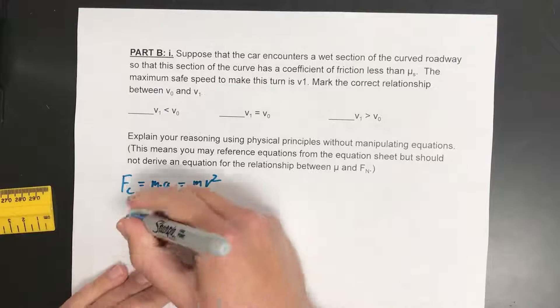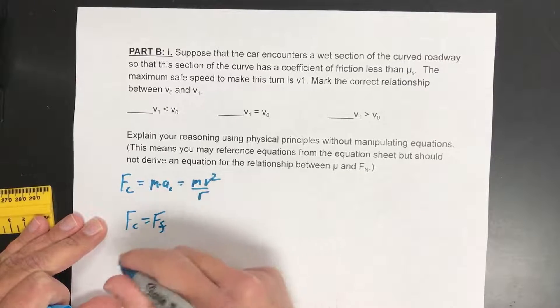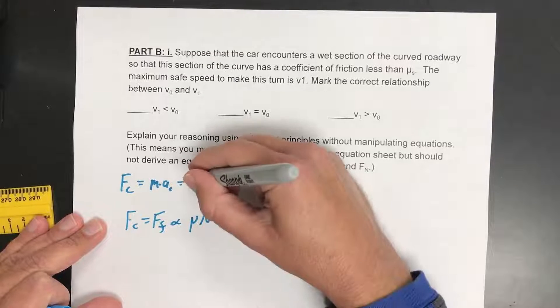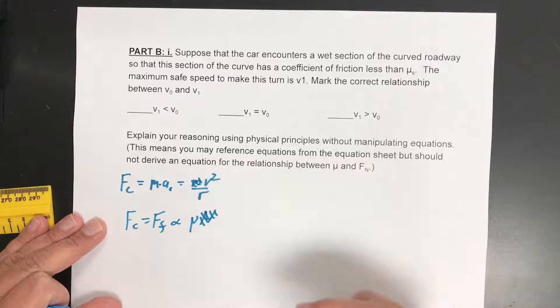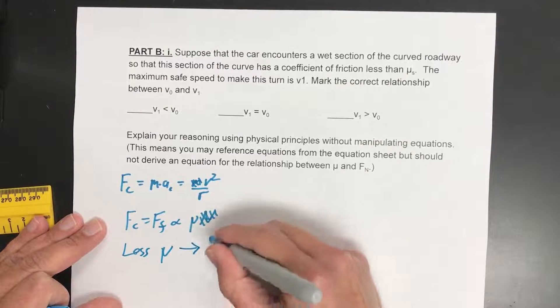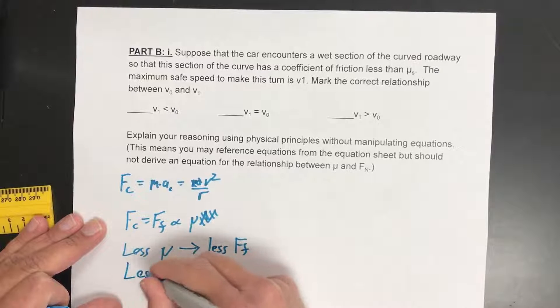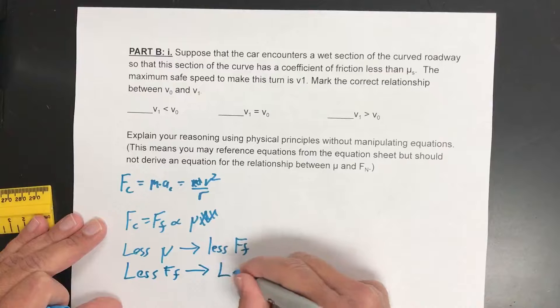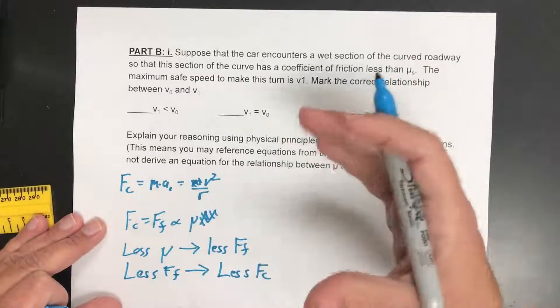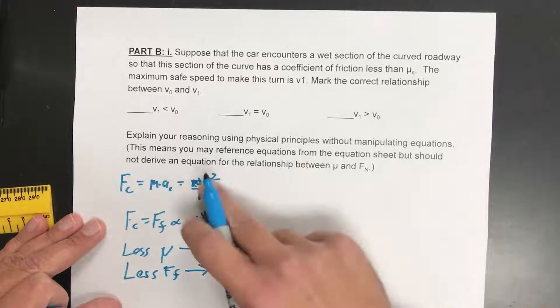So the thing is our centripetal force is caused by the force of friction. And the force of friction is proportional to the coefficient of friction times the normal force. Well if we don't change our mass that's constant so our normal force doesn't change. So less coefficient of friction leads to less force of friction.